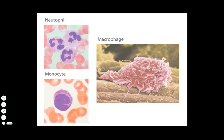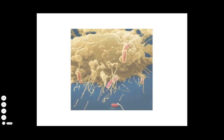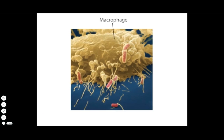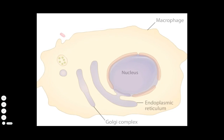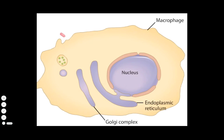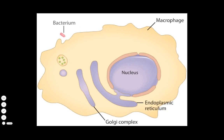Like monocytes and neutrophils, macrophages are also phagocytic. This scanning electron micrograph shows a macrophage using long membrane extensions to engulf bacteria. Macrophages are the cells most likely to make first contact with invading pathogens.